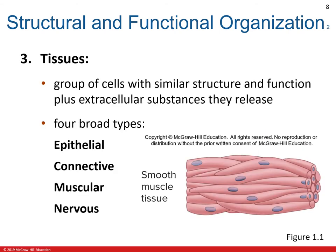As cells combine together, they make up tissues. Tissues are a group of cells with similar structures and function, plus extracellular substances that they release. There are four broad types of tissues: epithelial, connective, muscular, and nervous tissues.